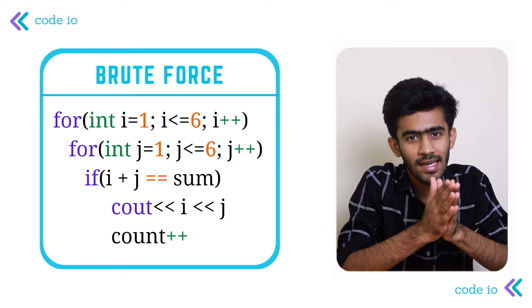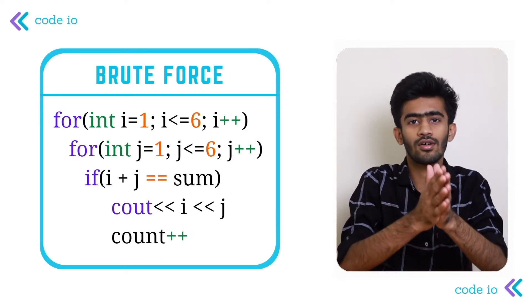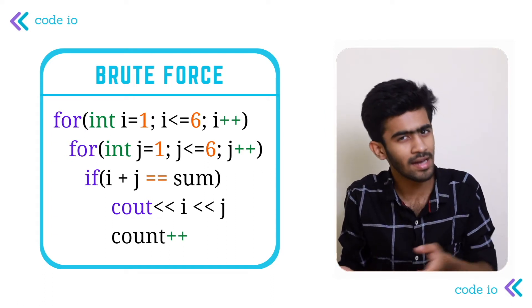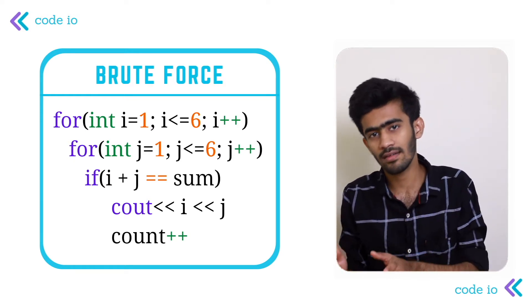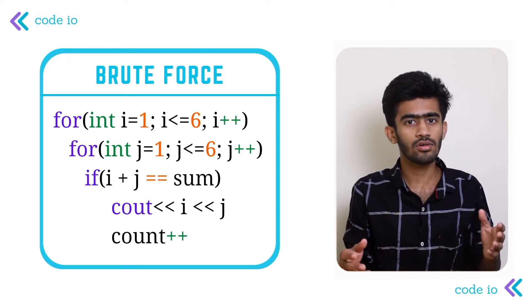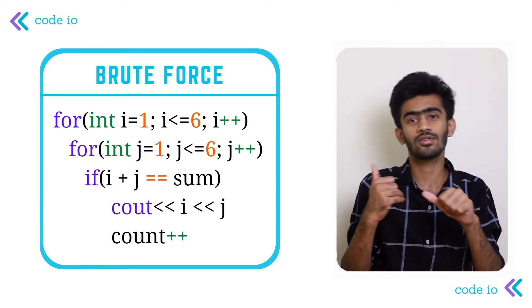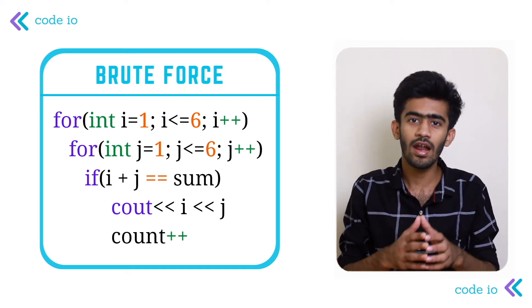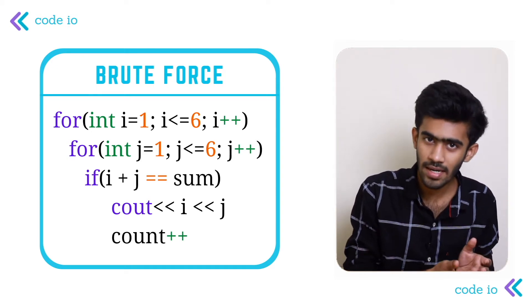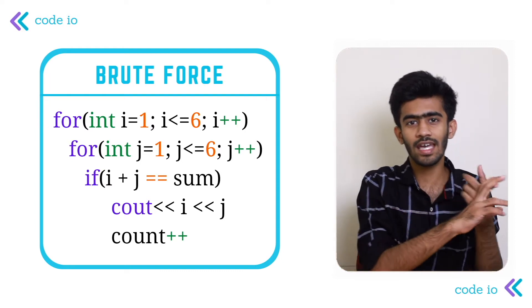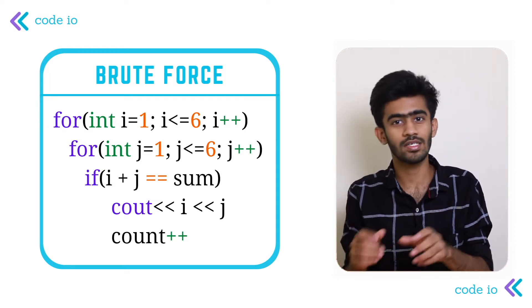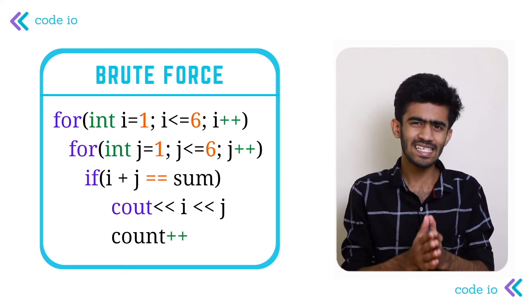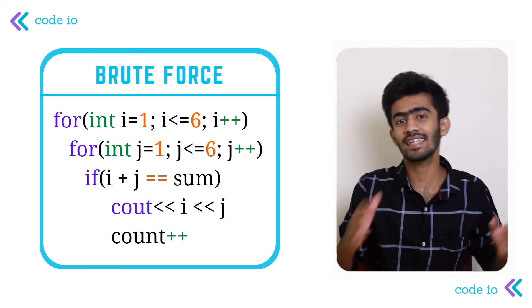The obvious brute force approach involves two for loops — one giving the value for each die. Die 1 is represented by for loop 1 and die 2 by for loop 2. Each goes from i equal to 1 up to 6, so all 36 outcomes from 1,1 up to 6,6 are tried, and whichever values add up to the given sum are counted and printed. This is a tedious approach that tries every single possibility.